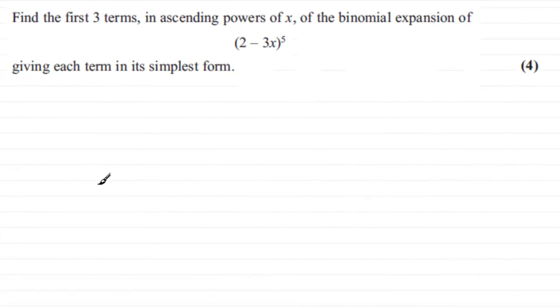Hi. Now what we have here is a question on the binomial expansion. We've got to find the first three terms in ascending powers of x of the binomial expansion of 2 minus 3x all to the power 5, giving each term in its simplest form.